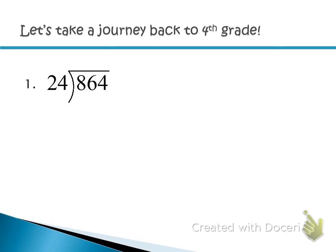Before we get into polynomials, we're going to journey back to fourth grade and do some long division with numbers. Remember how this worked? We had to figure out how many times 24 would go into — well, it won't go into 8, so how many times 24 would go into 86? A trick is figuring out how many times 2 will go into 8. That gives you the first number to try. 2 goes into 8 four times, so put a 4 on top above the last digit.